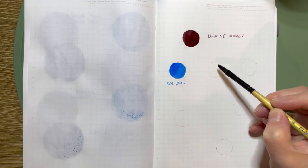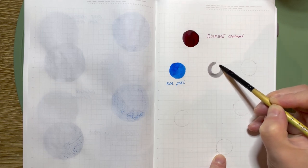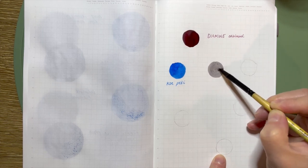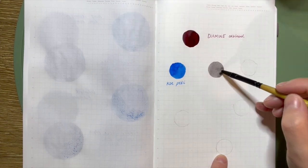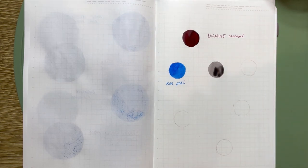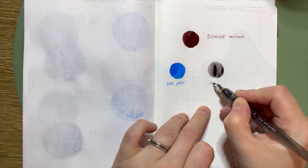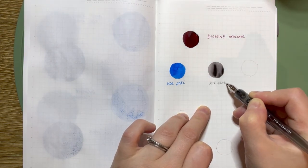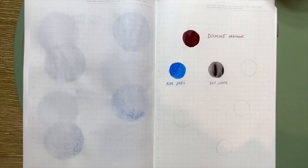The next one is one that I do really like. It is Pilot Iroshizuku Kirisami. This is a gray, but definitely a warmer gray. I've also finished a sample of Fuyusiugun - I think I'm saying that right - which is a colder gray. I think that this gray is just beautiful.